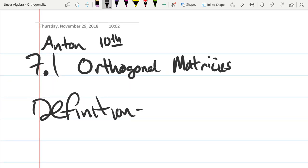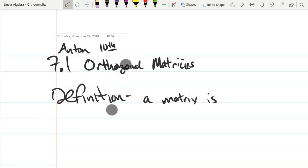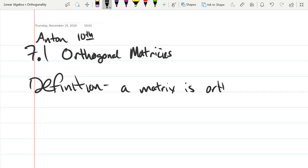So we'll start with a definition. A definition of an orthogonal matrix.